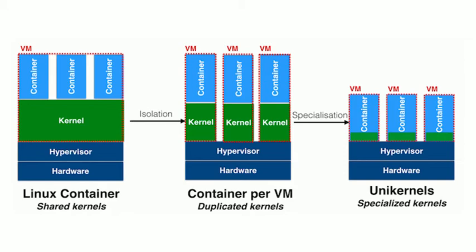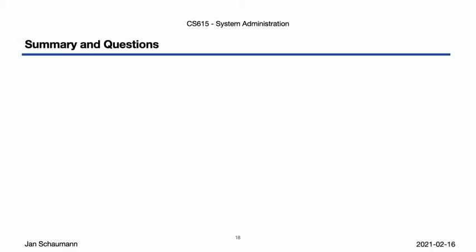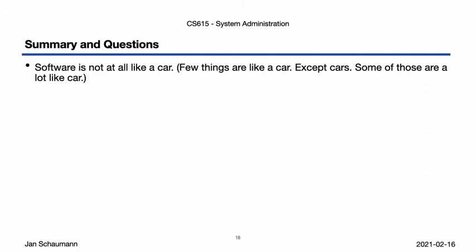We'll try to bring a little more clarity to some of this in the coming videos, when we talk about software bundling and installation and the separation of system software from the OS. To summarize what we covered today: first, software really is not at all like a car — car analogies are almost always pretty awful. Next, even though this sounds obvious, we sometimes forget: all of the software we're talking about is indeed software — it's flexible, can be changed, can be configured, can be compromised. Many of the principles will apply when we talk about package management, software updates, or security — and they apply more or less equally to firmware as to the base OS as to add-on software.